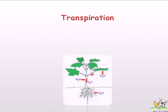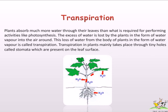Transpiration: plants absorb much more water through their roots than what is required for activities like photosynthesis. The excess water is lost by the plants in the form of water vapor into the surrounding air. This loss of water from the body of plants in the form of water vapor is called transpiration. Transpiration in plants mainly takes place through tiny holes called stomata, which are present on the leaf surface.